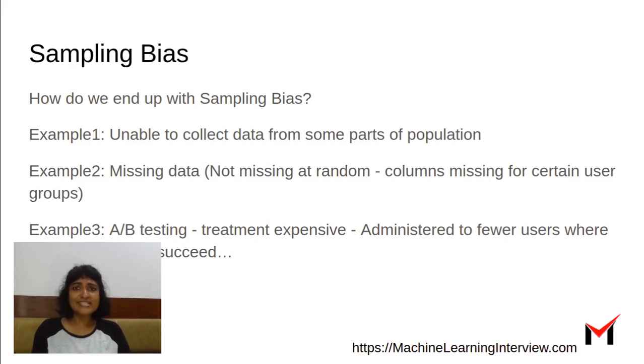So how do we get sampling bias? Sometimes we could be unable to collect data from some parts of the population or there could be missing data in our datasets. The data is not missing at random but columns are missing for certain user groups or features are missing for certain user groups.